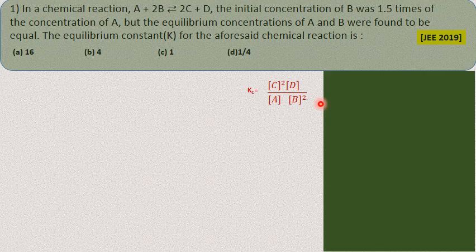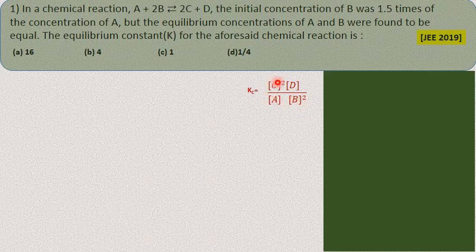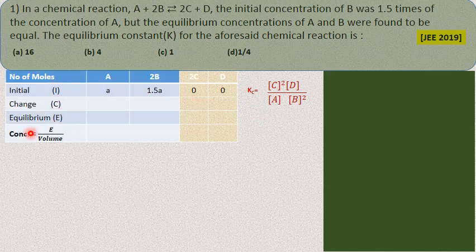A common mistake students make is taking the sum of C and D instead of the product of their molar concentrations, and similarly taking the sum of reactants instead of the product. Remember: it is the product of molar concentrations of products divided by the product of molar concentrations of reactants. So you need to know the molar concentrations of A, B, C, D at equilibrium to calculate Kc.